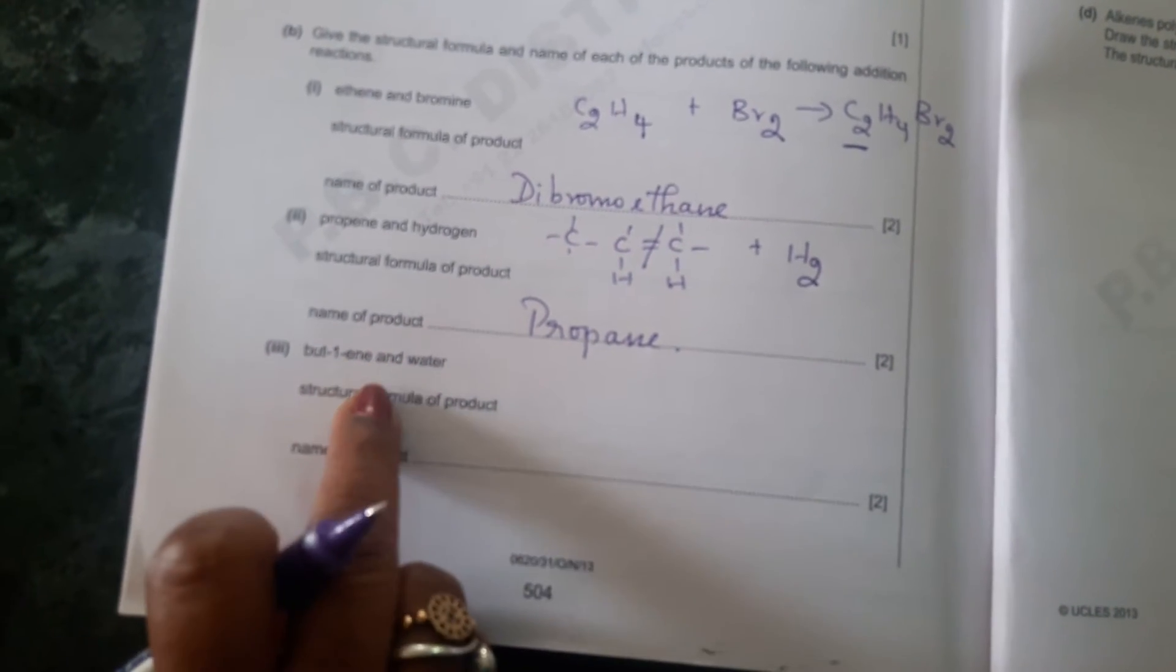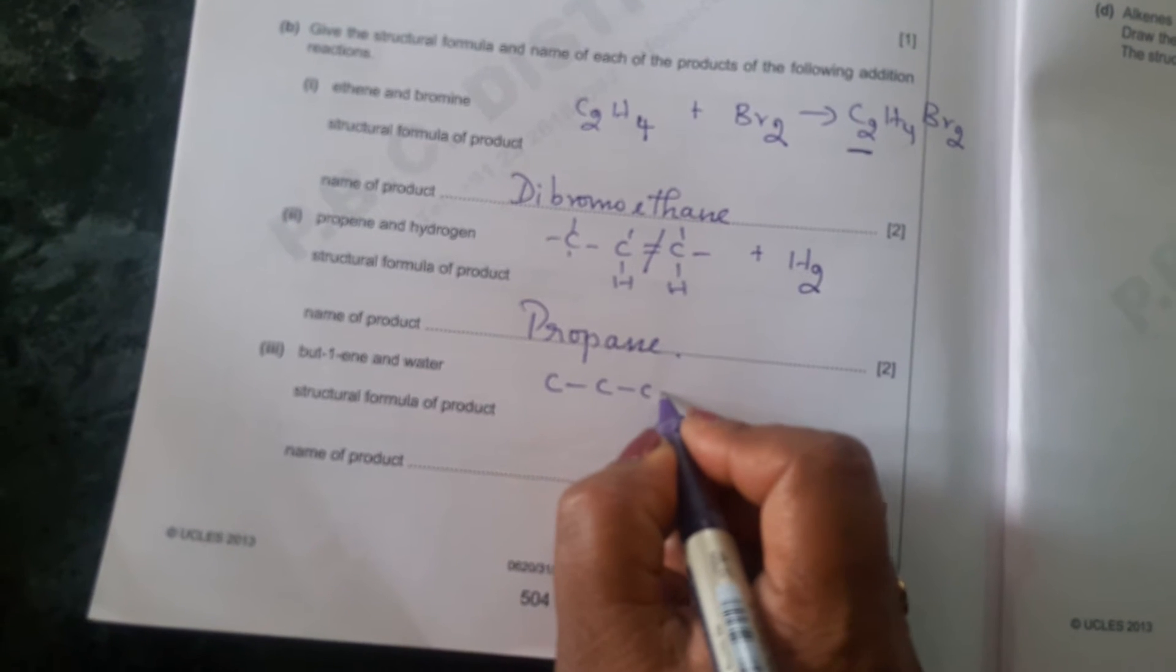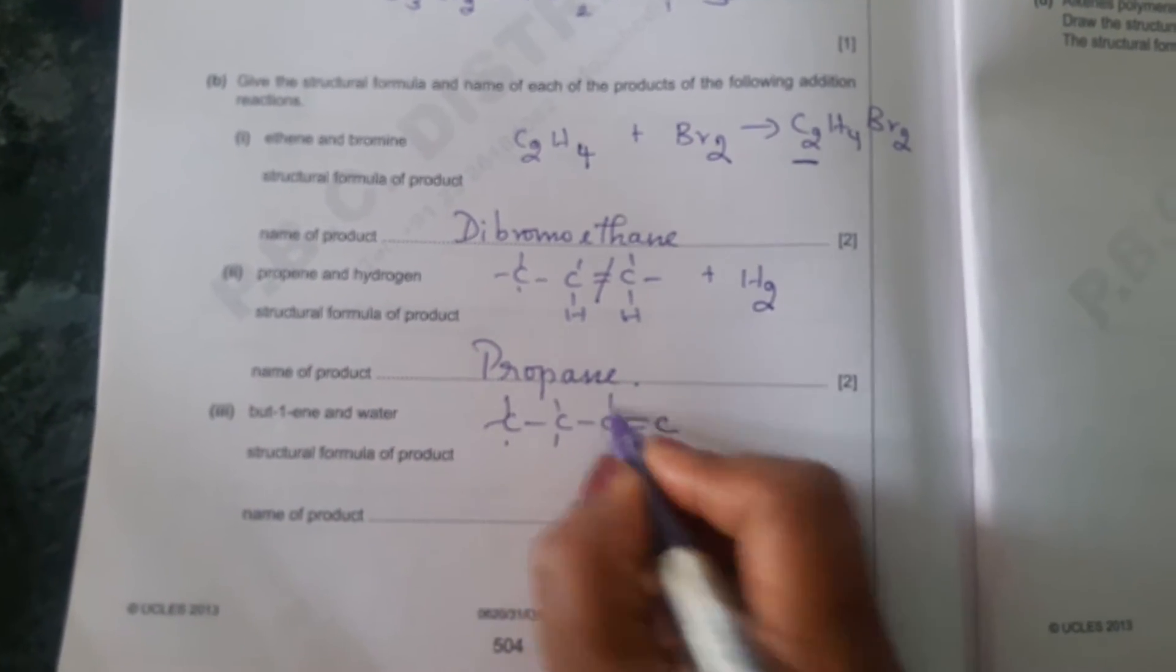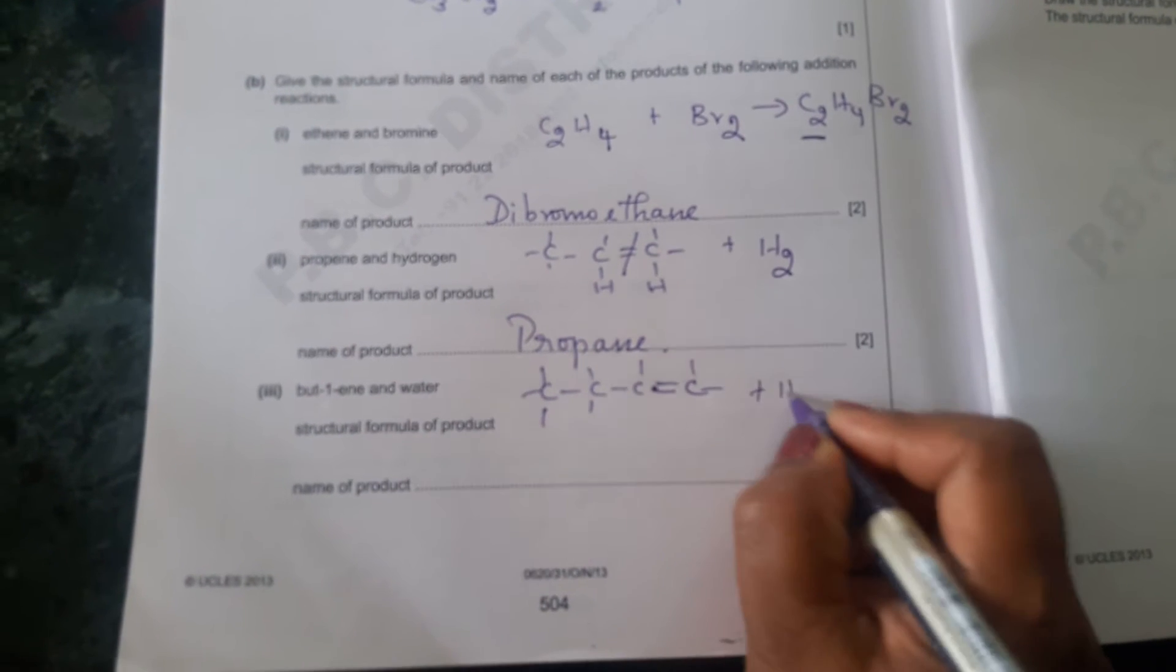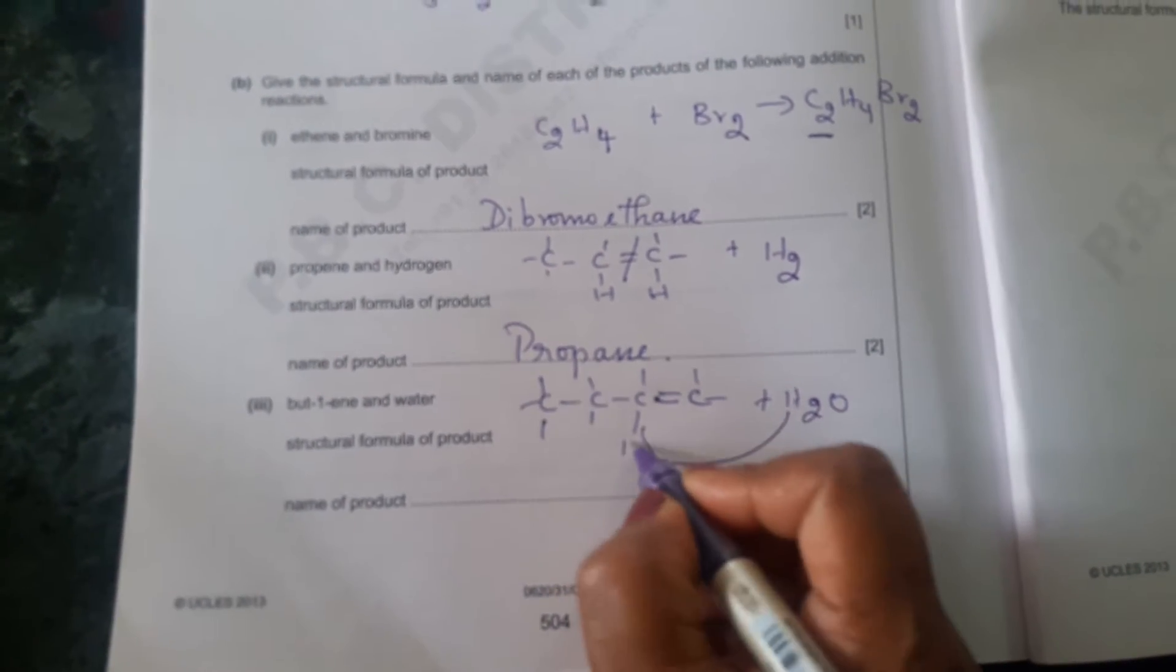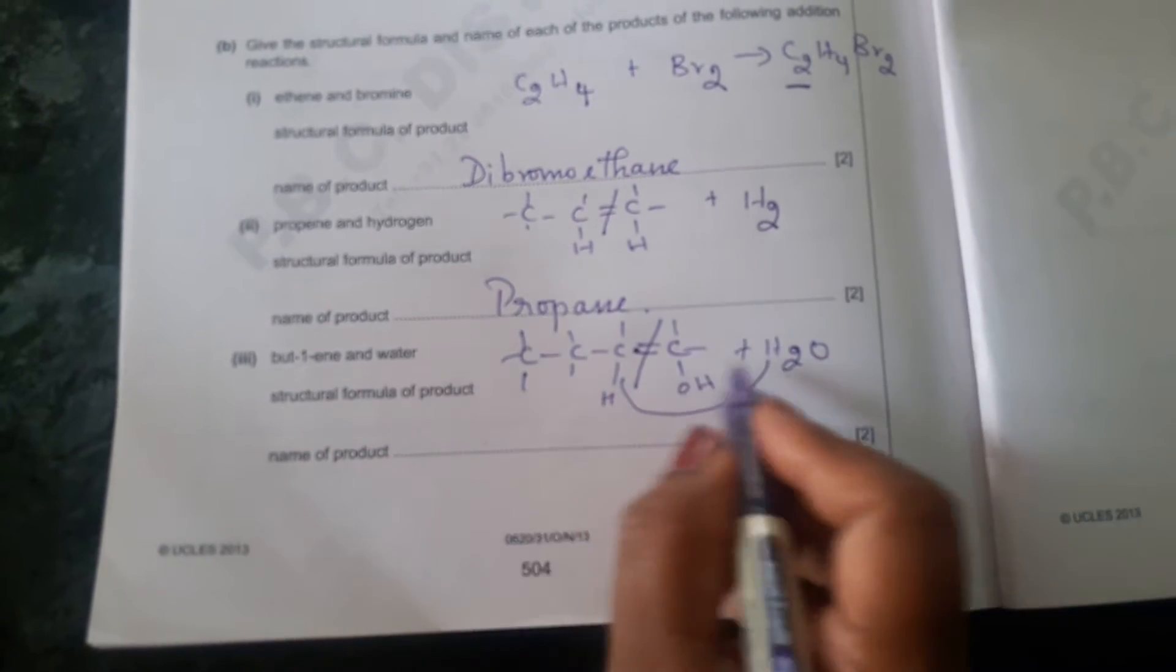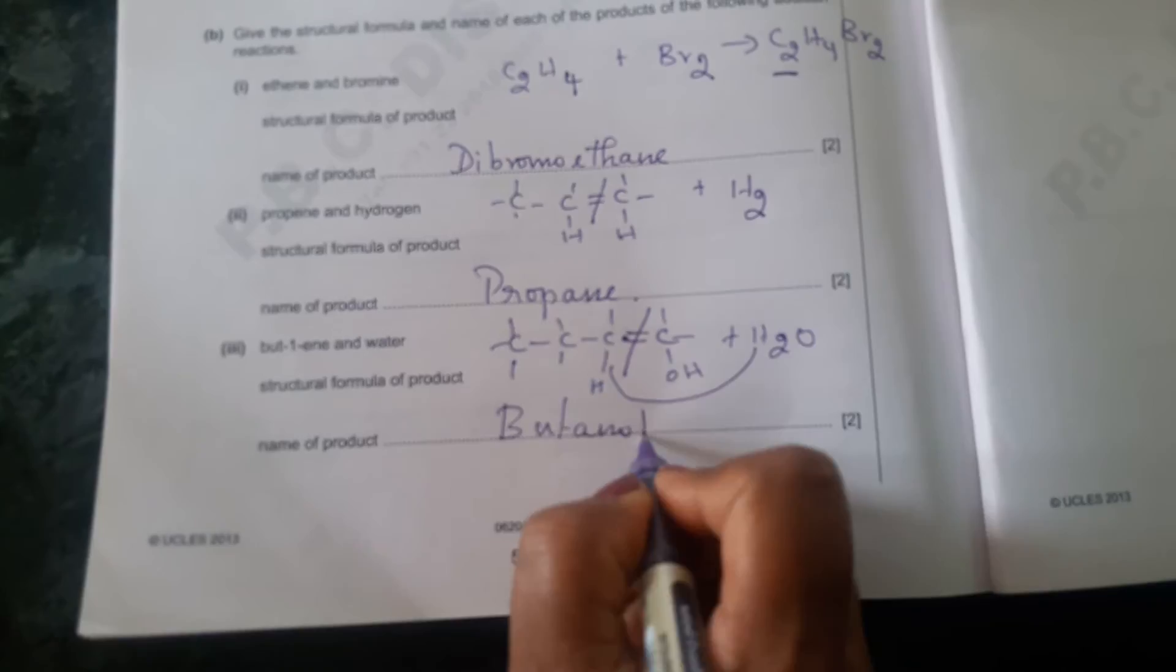And bute-1-ene. Bute-1-ene, how will you write? Four carbon atoms with the first carbon atom double bond. That is why bute-1-ene. So bondings will be like this. So bute-1-ene when it reacts with water, the hydrogen will react over here as hydrogen and OH. So in this case, the double bond breaks into single bond. And this becomes butanol.